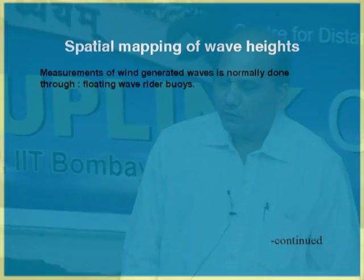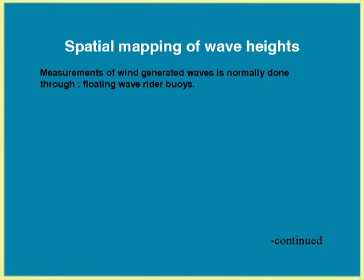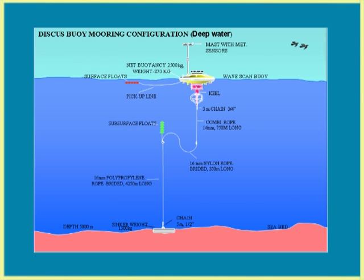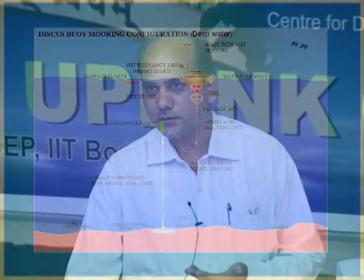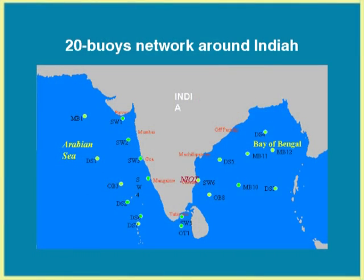The first topic is spatial mapping of wave heights. Measurement of wind-generated waves is normally done through wave rider buoys or floating buoys. These floating buoys transfer all wave information to satellites, and from satellites to base stations. Around India there are many wave rider buoy stations deployed by various agencies, and this network has been developed all over the world, particularly in the US. Information is now available online through US agencies.